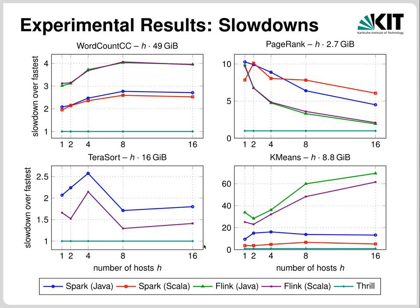For sorting, Thrill is only a factor 1.4 faster than Flink and 1.8 faster than Spark. But for K-Means, the difference is large again: Thrill is a factor of 5 faster than Spark with Scala, a factor 13 faster than Spark with Java, and a factor of more than 60 faster than Flink.